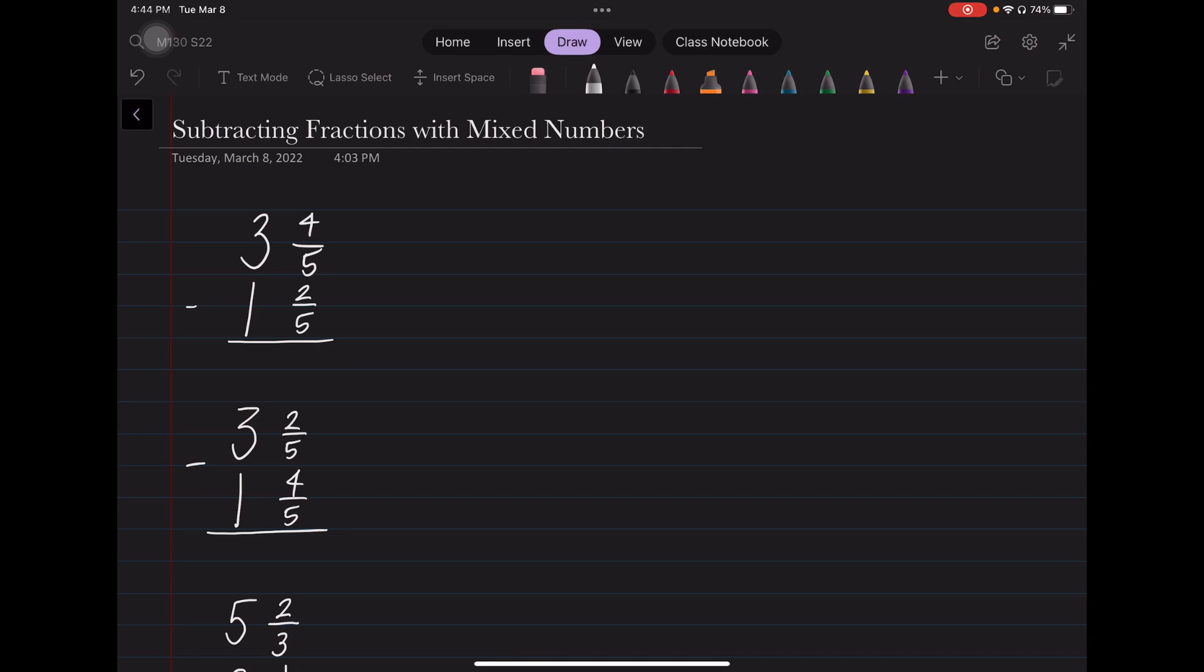First, I have a couple of examples that have common denominators, and then I'll do one that has a non-common denominator. When I'm subtracting here, 3 and 4 fifths minus 1 and 2 fifths, I do 4 fifths minus 2 fifths first, just to make sure that I don't have to borrow anything.